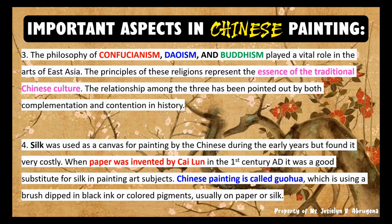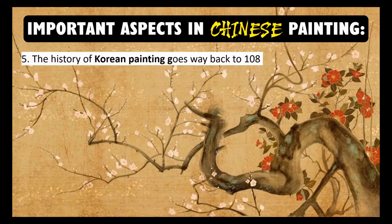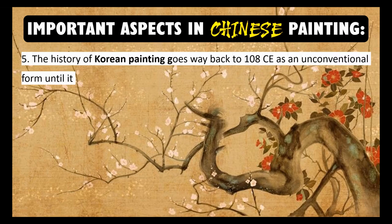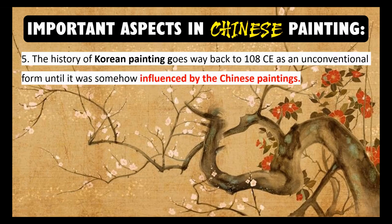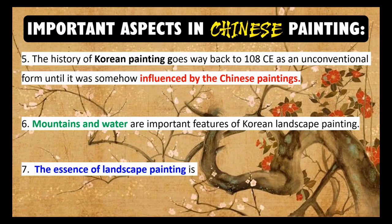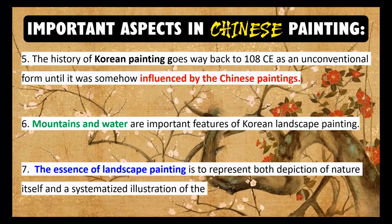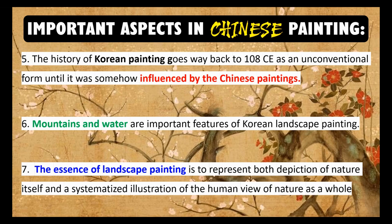Fifth, the history of Korean painting goes way back to 108 CE as an unconventional form, until it was influenced by Chinese paintings. Sixth, mountains and water are important features of Korean landscape painting. Seventh, the essence of landscape painting is to represent both a depiction of nature itself and a systematized illustration of the human view of nature as a whole.